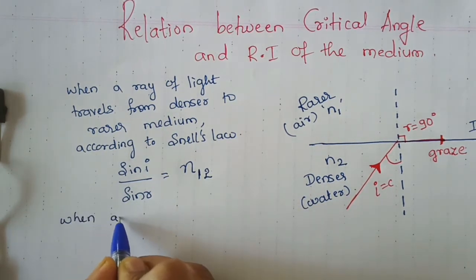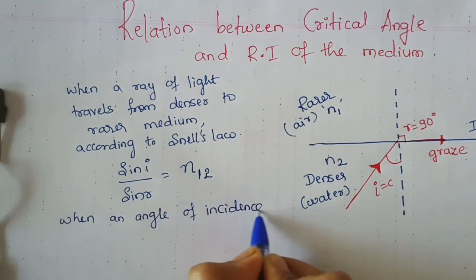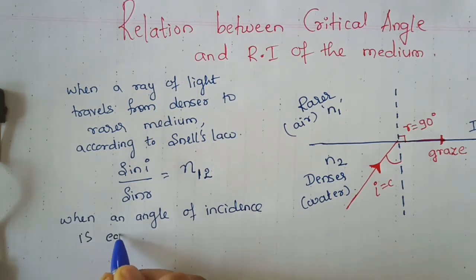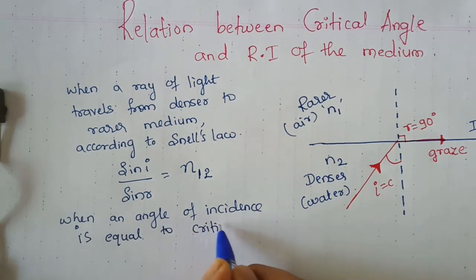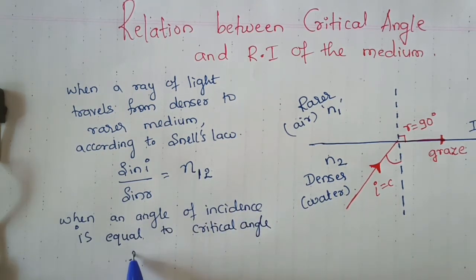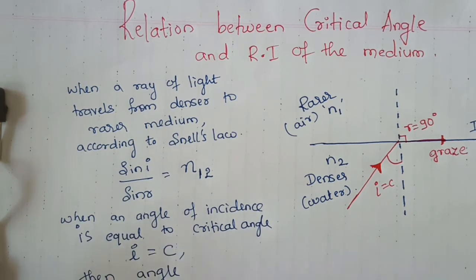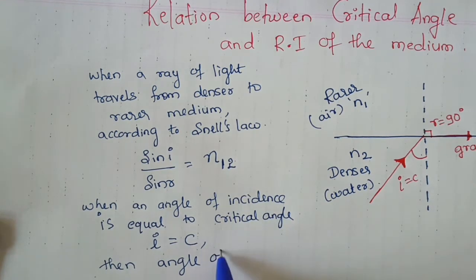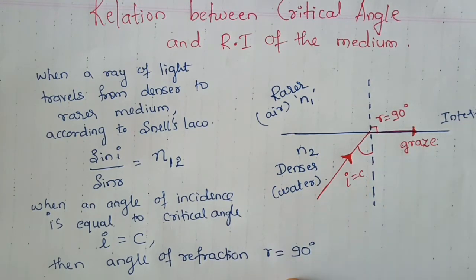When the angle of incidence is equal to the critical angle — that is, when i equals C — then the angle of refraction r becomes 90 degrees. This is the phenomenon happening here.